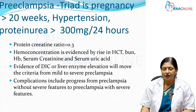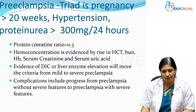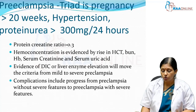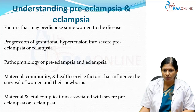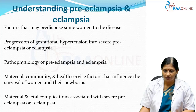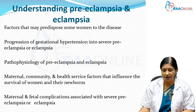In pre-eclampsia, there are two varieties: mild and severe. If there are deranged liver enzymes or evidence of DIC, this straightaway becomes severe pre-eclampsia. Even mild pre-eclampsia can progress to severe pre-eclampsia very quickly — there is no moderate variety. We will discuss factors that predispose women to this disease, the progression of gestational hypertension into severe pre-eclampsia or eclampsia, and the pathophysiology of pre-eclampsia and eclampsia.